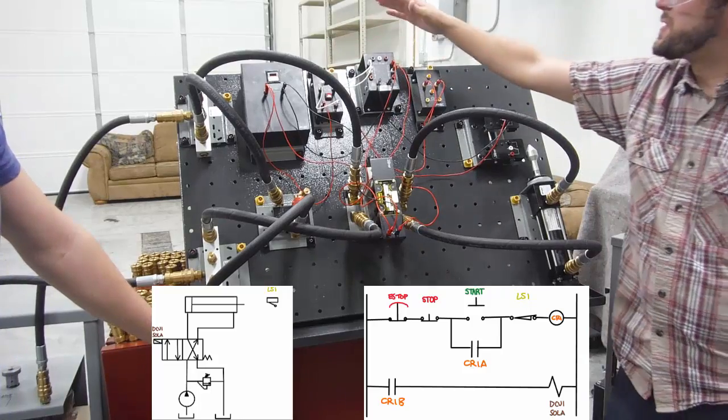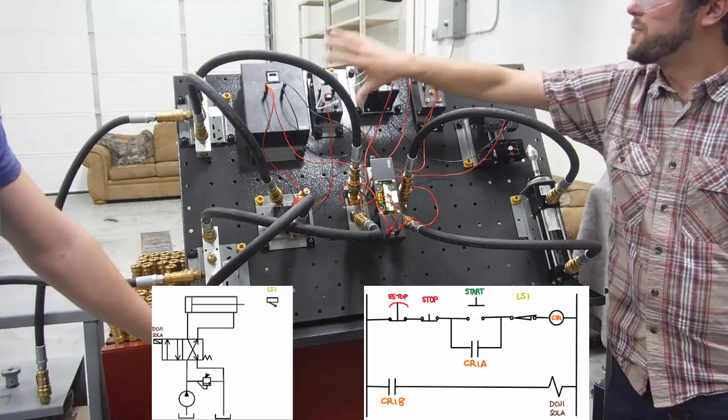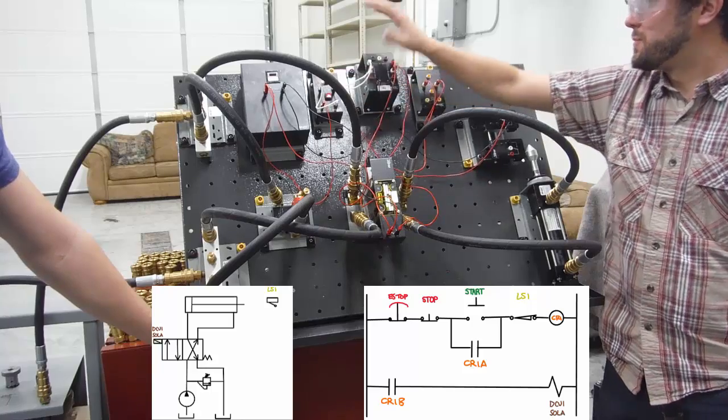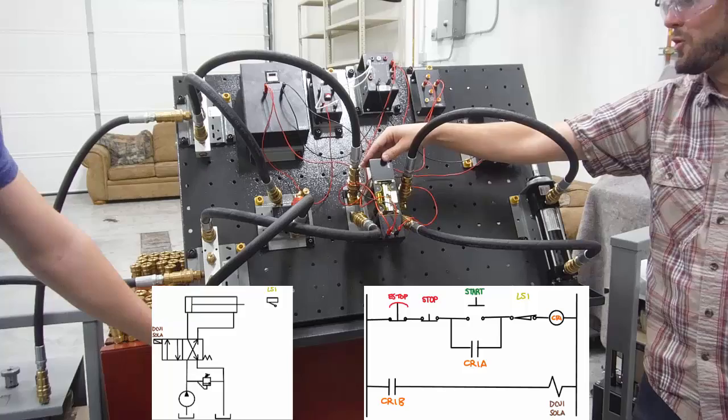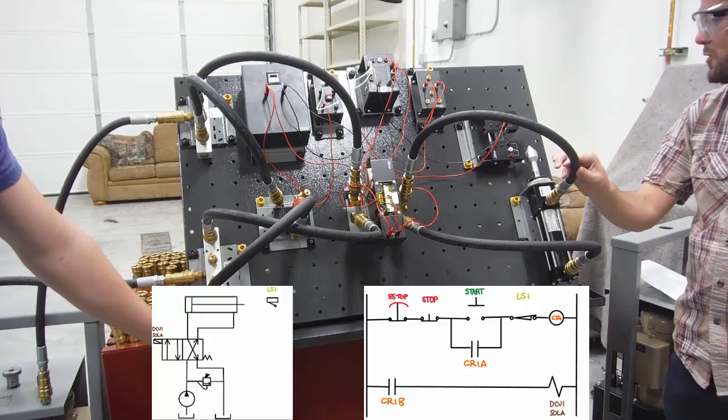Then here's the go switch in black. It leads us to this control relay that creates a holding circuit. The signal then goes down to our directional control valve, and that will set this in motion.